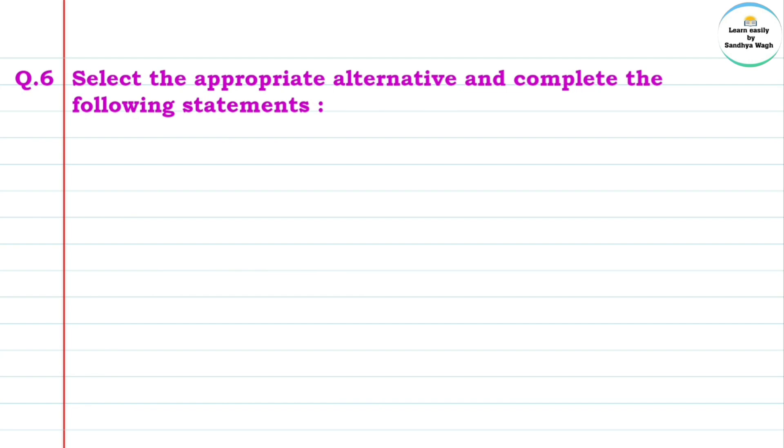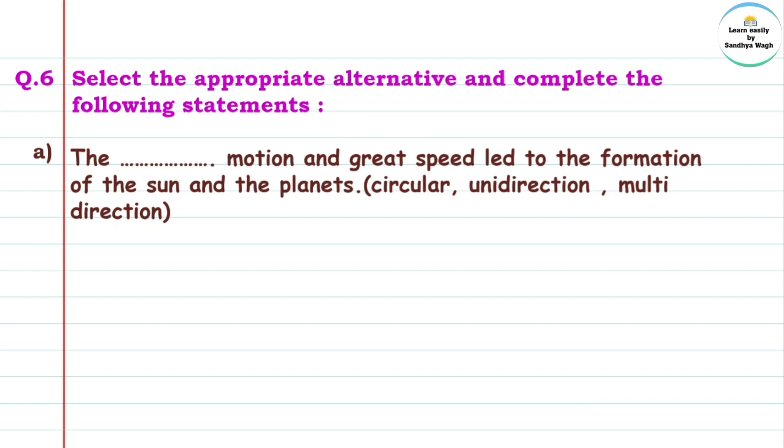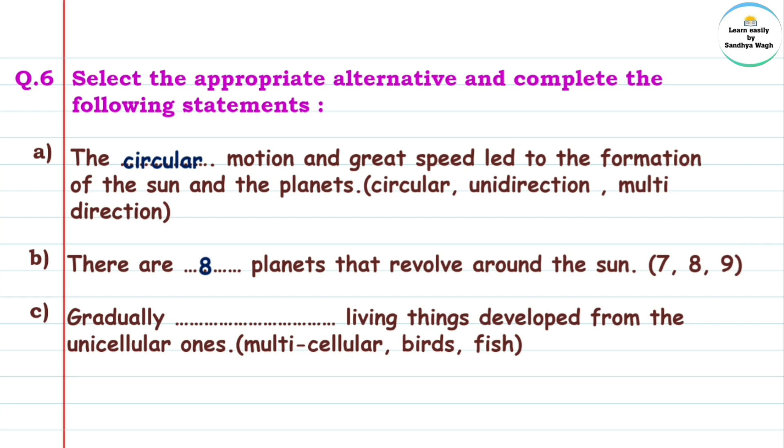Question 6: Select the appropriate alternative and complete the following statements. Part a: The circular motion and great speed led to the formation of the sun and the planets. Options: circular, unidirection, multidirection. Answer: circular. Part b: There are how many planets that revolve around the sun? Answer: eight. Part c: Gradually, multicellular living things developed from the unicellular ones. Options: multicellular, birds, fish. Answer: multicellular.